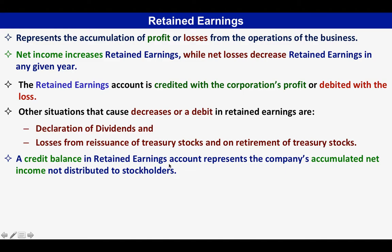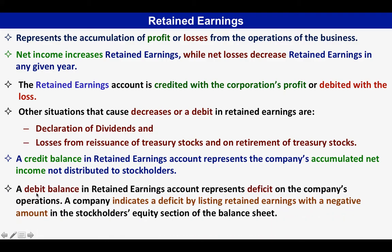A credit balance in the retained earnings account means that at the end of a certain accounting period, such balance is the accumulated net income not distributed to stockholders. If it is a debit balance, the company has a deficit, indicated by listing retained earnings with a negative amount in the stockholders' equity section of the balance sheet — shown in parenthesis when presenting the balance sheet.